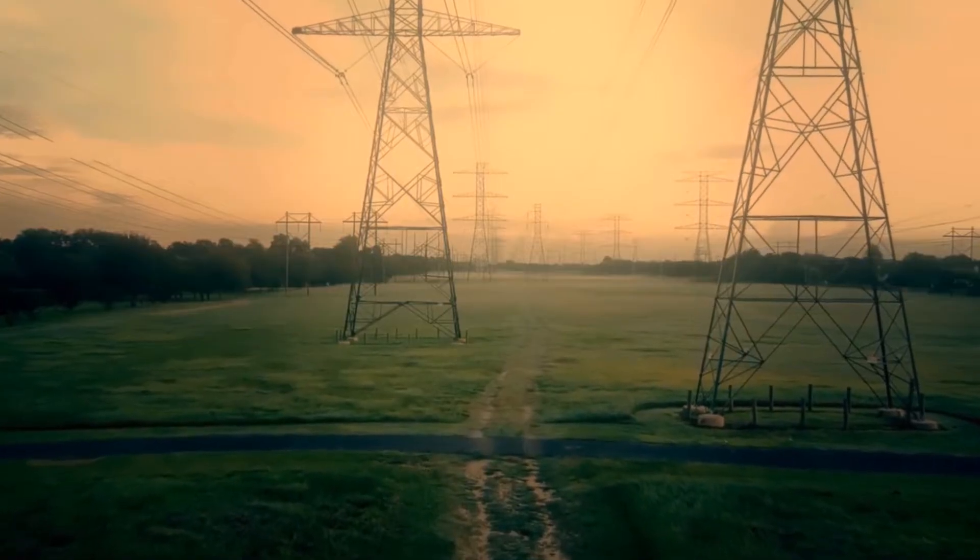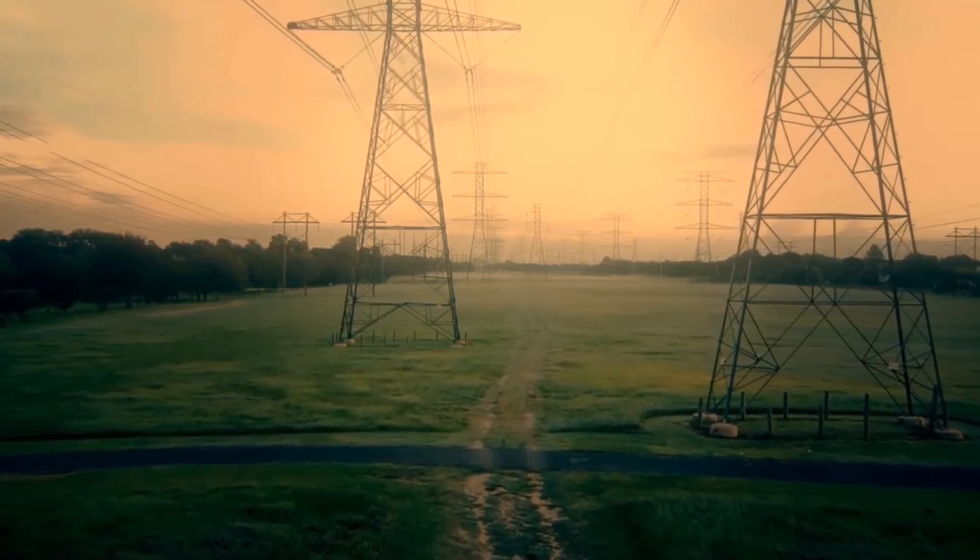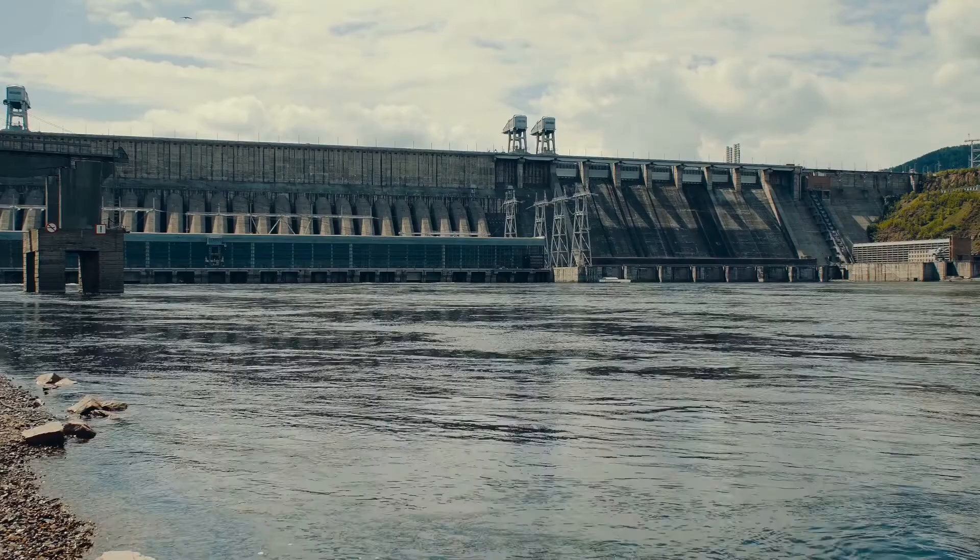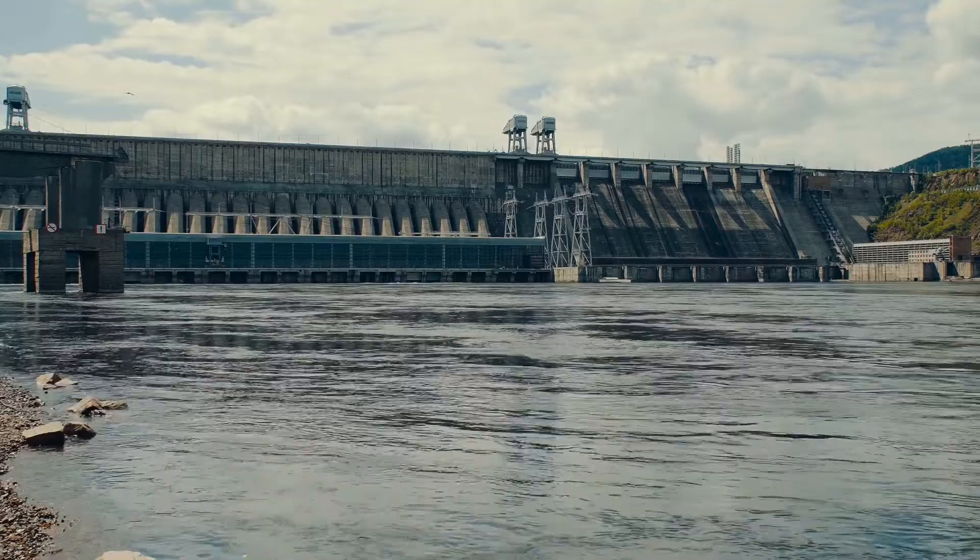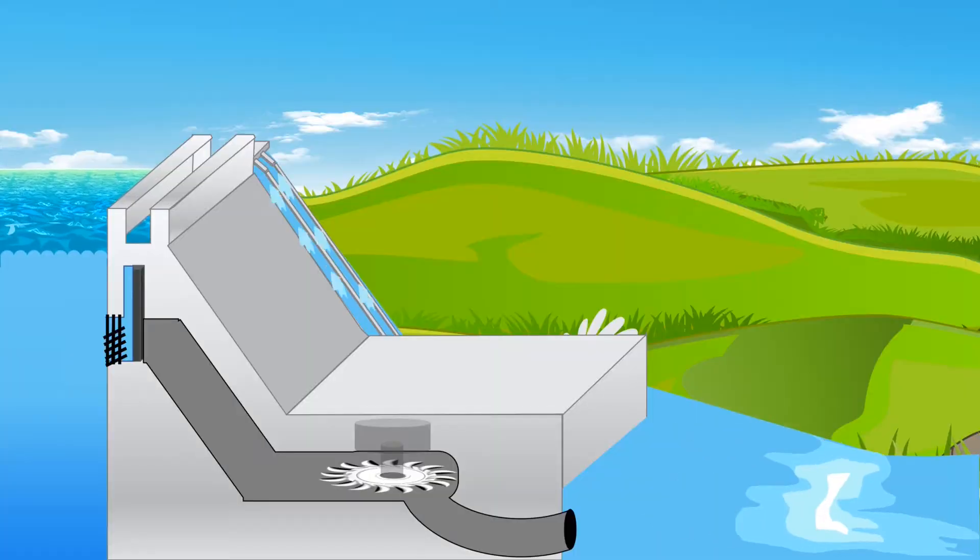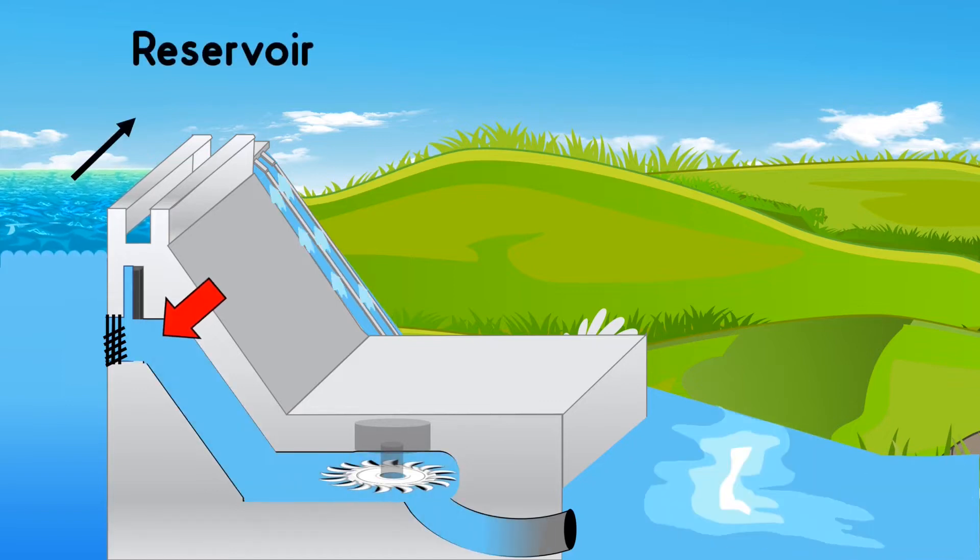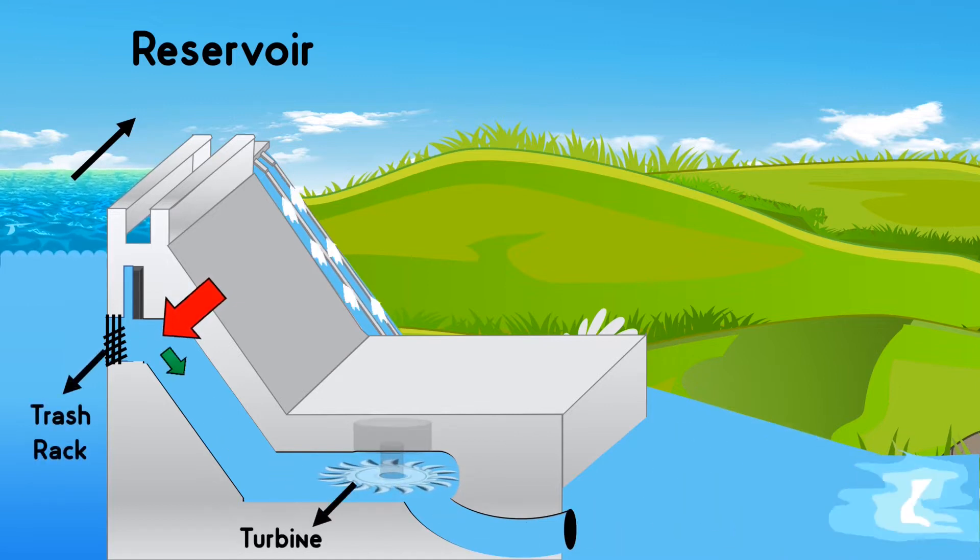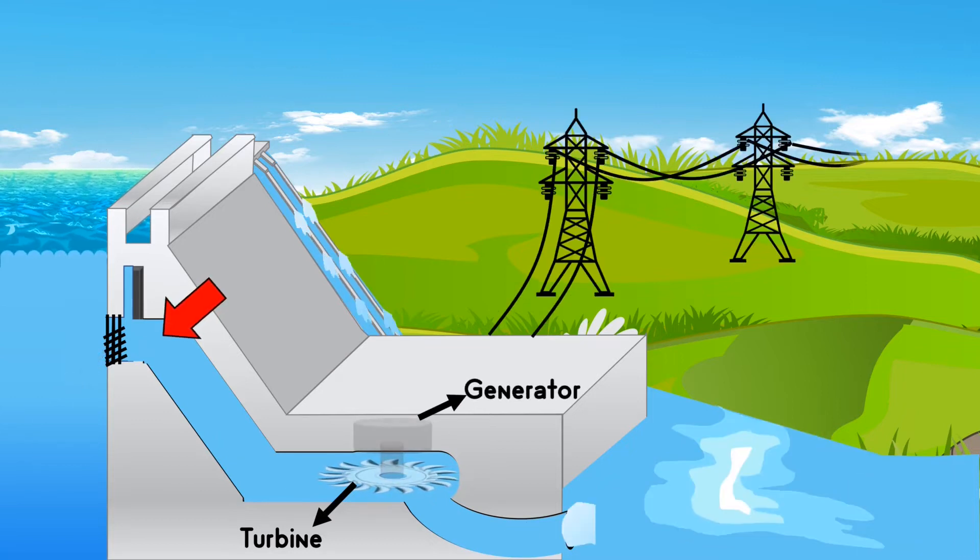If we need continuous power generation, we need a large storage of water. It can be achieved by building a dam across the river or stream to hold back water. Electricity is produced by releasing water from the reservoir. Once water is released, gravity takes over and the water flows downwards through the turbine which activates the generator. This type of hydropower plant is called storage hydropower.